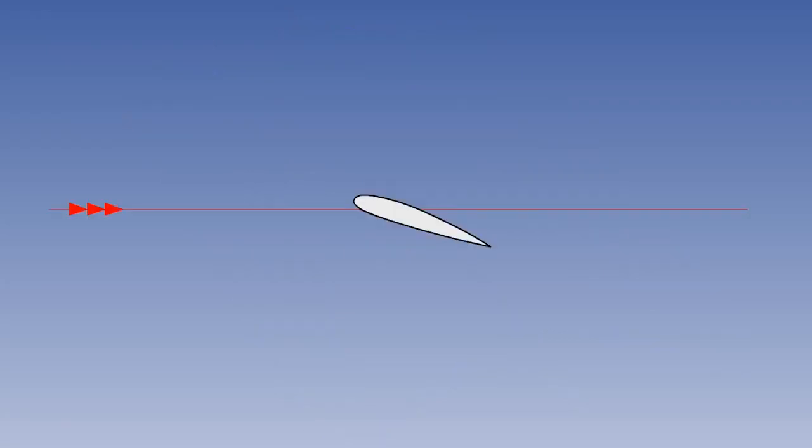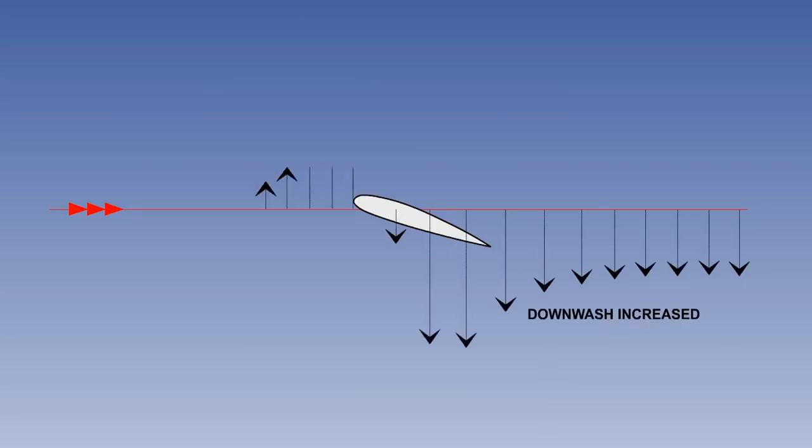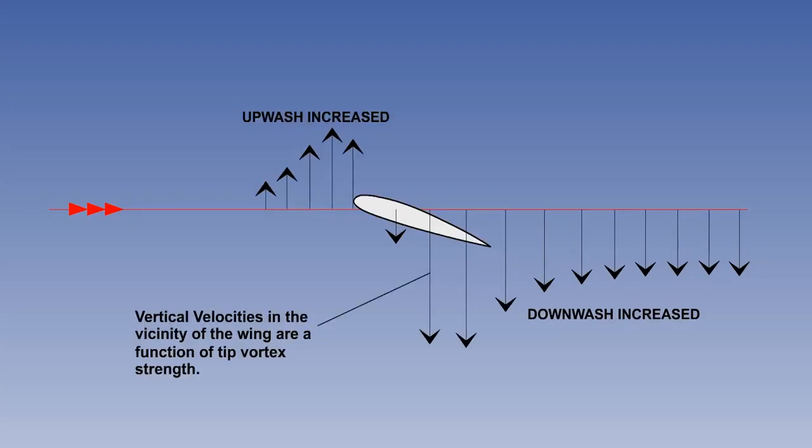If we look at this effect in cross-section, the vertical velocities can be seen to be greatest close to the wing where the vortices are strongest, and immediately ahead of the wing. These vertical velocities are a function of vortex strength. So the stronger the vortices, the greater the reduction in effective angle of attack.